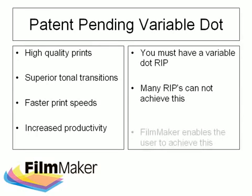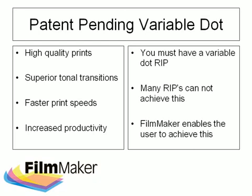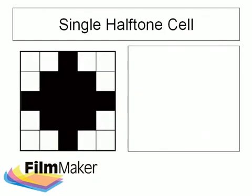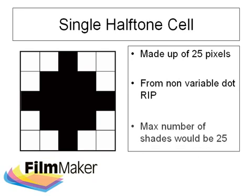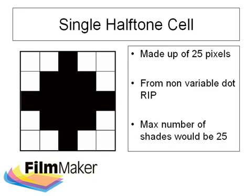Now by using Filmmaker with your variable dot printer, you will unleash the full potential of this unique system. This illustration on screen shows a single halftone cell made up of 25 pixels printed from a non-variable dot RIP. In this case, the maximum number of shades achievable would be 25, and the only way to improve on this is to increase the DPI that we print at, which would in turn increase the number of pixels per cell.